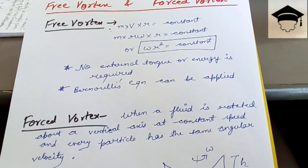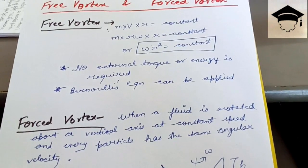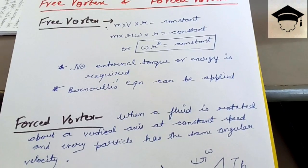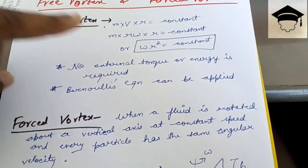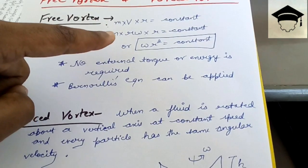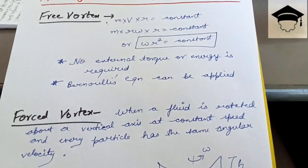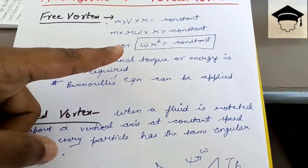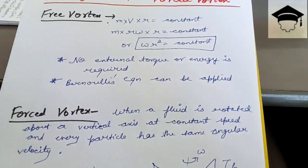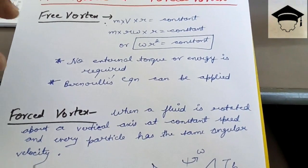The governing equation for free vortex flow is that angular momentum is constant. Angular momentum is given by mv·r equals constant. Since v equals r·ω, substituting gives m·r·ω·r equals constant. Mass remains constant, so ω·r² equals constant for free vortex flow. Remember that Bernoulli's equation can be applied to free vortex flow.